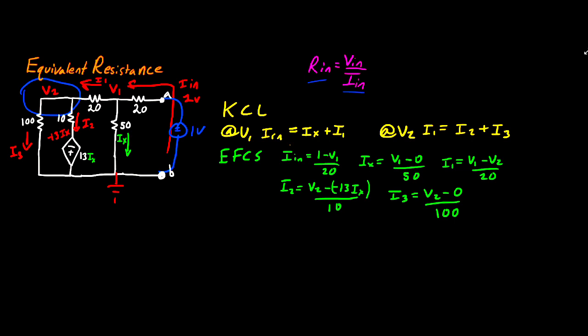So to do that, I'm going to start off by taking my KCL at V1 and substituting my Ohm's law equations into that KCL. So that's going to look like 1 minus V1 divided by 20 is equal to V1 divided by 50 plus V1 divided by 20 minus V2 divided by 20. And this is just the KCL of V1 with our Ohm's law equations swapped in. Now we can do the same thing for our KCL of V2, and we'll have V1 divided by 20 minus V2 divided by 20 is equal to our I2 plus I3.